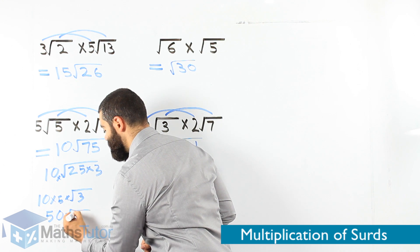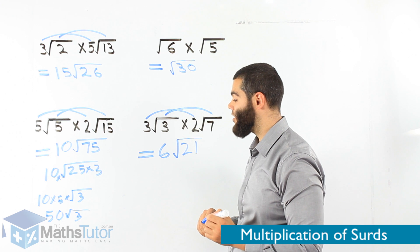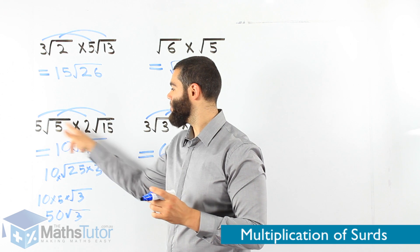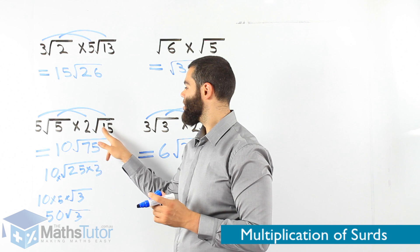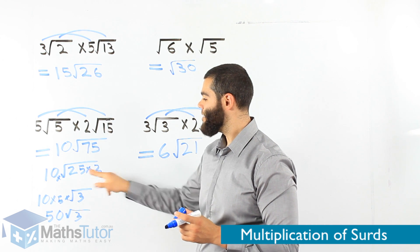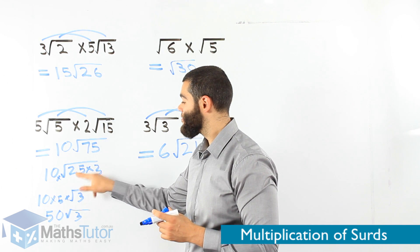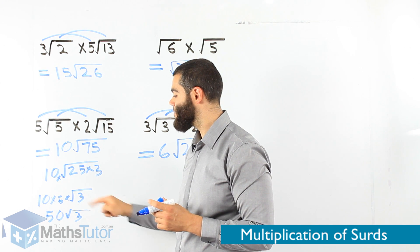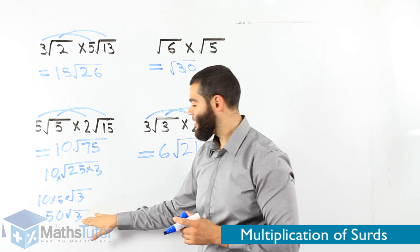So 10 stays outside. We look for two numbers that multiply to get 75 where one of them square roots. 25 times 3 makes 75 — the 25 square roots, it becomes a 5, and it comes outside and multiplies the 10. So 5 times 10 is 50, giving us 50 root 3. That's our final answer. Always ask: can we simplify?